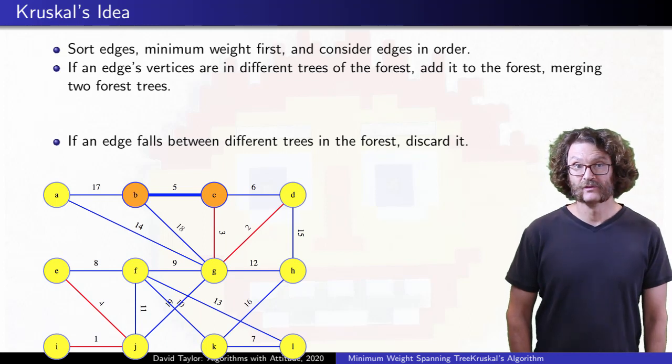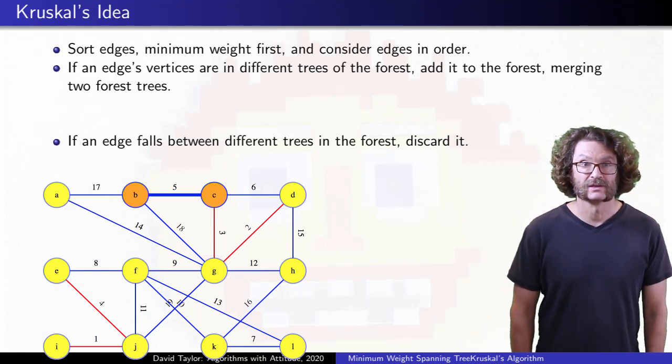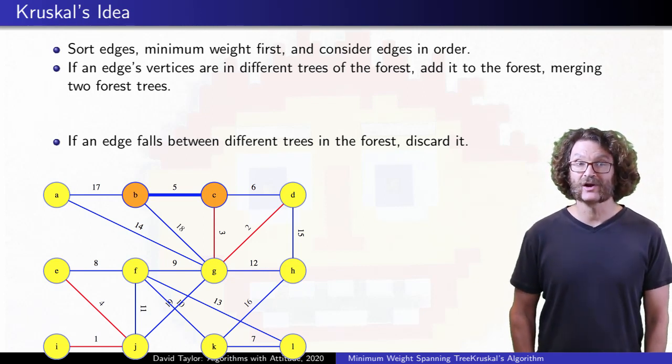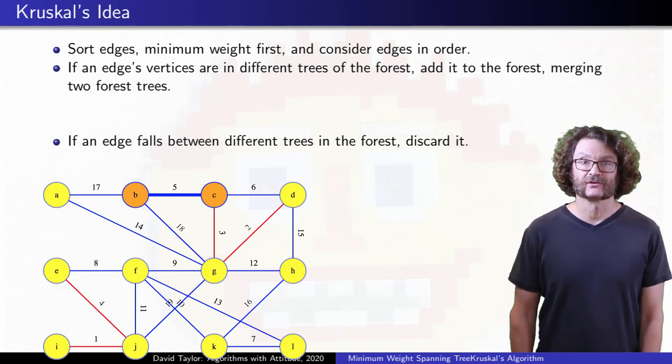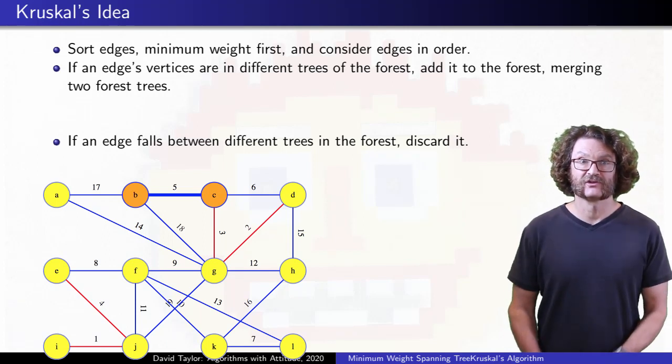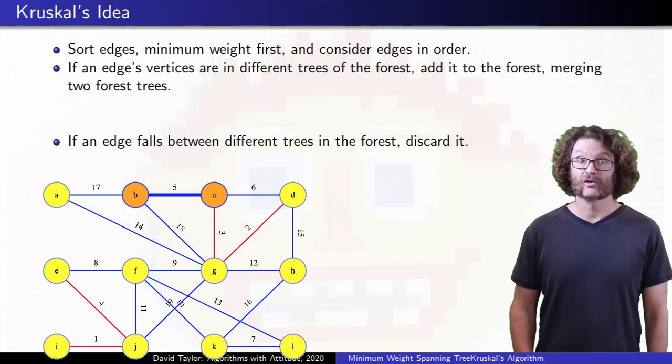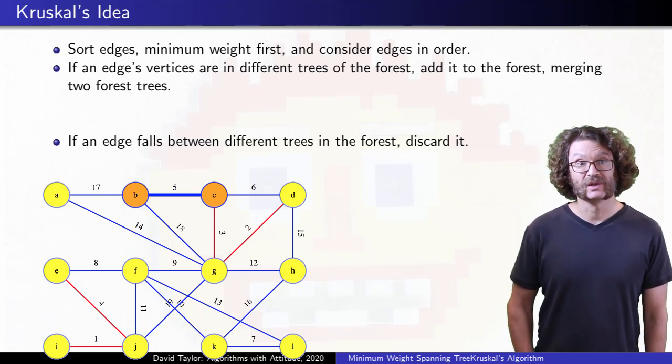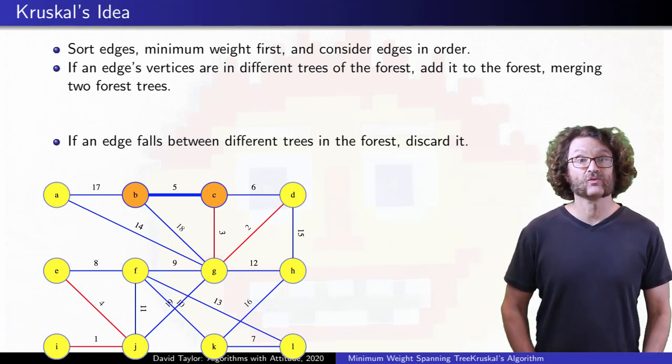Why? We've already considered all edges with lower weight. At this instant in time, any edge ever added to the forest obviously has both of its vertices in the same tree, and that would be true for any edge we discarded too. It was discarded because its vertices were already in the same tree.